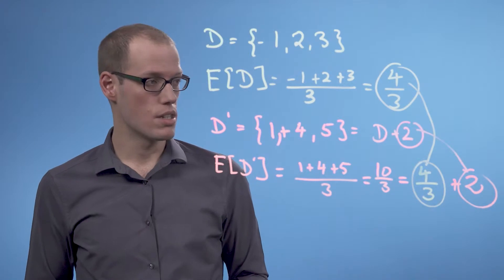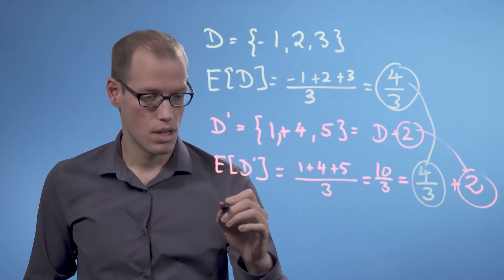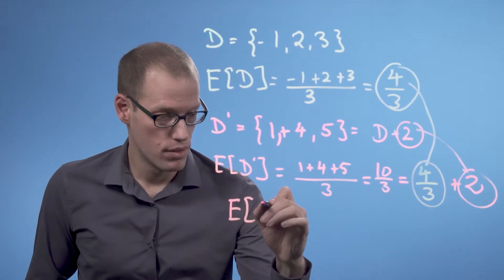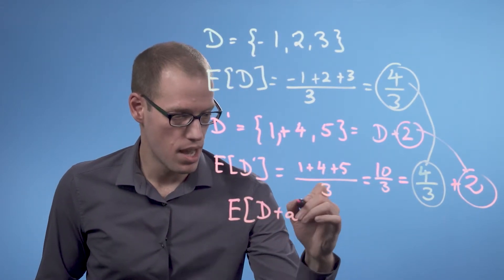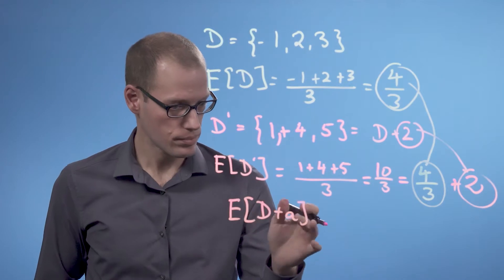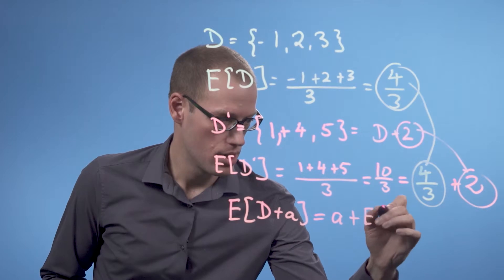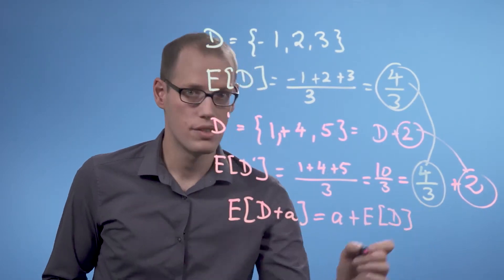We can generalize this now to general shifts. We can write the expected value of D plus A, where A is a constant factor, is A plus the expected value of D.